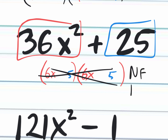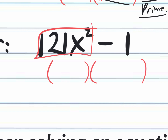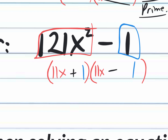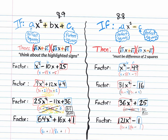For the last example of this type: do we have a difference of two squares? Yes — 121x squared minus 1. The square root of 121x squared is 11x; the square root of 1 is 1. The signs must be one positive and one negative: (11x plus 1)(11x minus 1). In summary: if you have a perfect square term in the first and last position of a binomial or trinomial, square root them, plug them into your factored form answer format, and think about the signs.